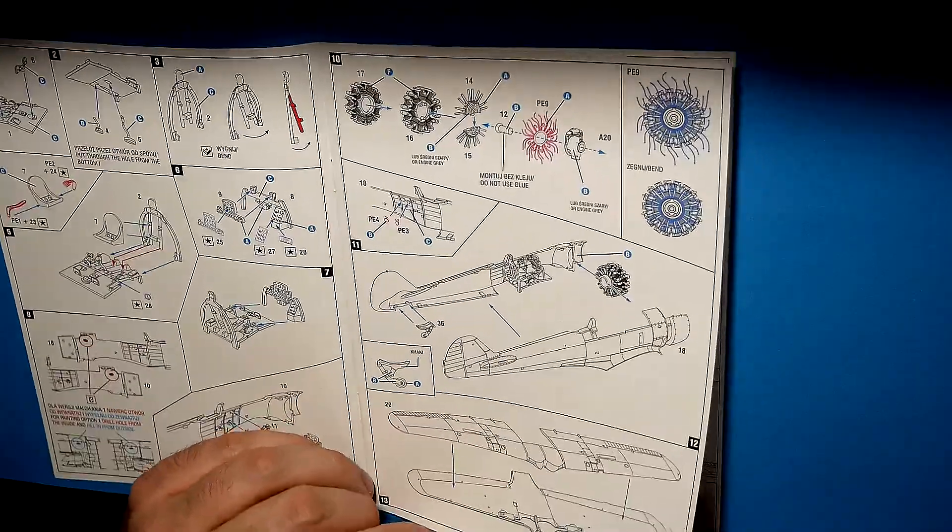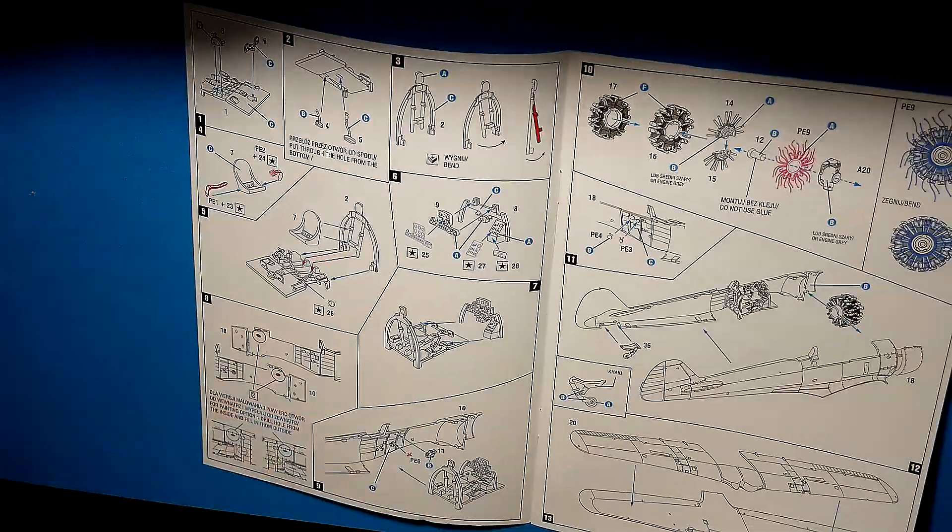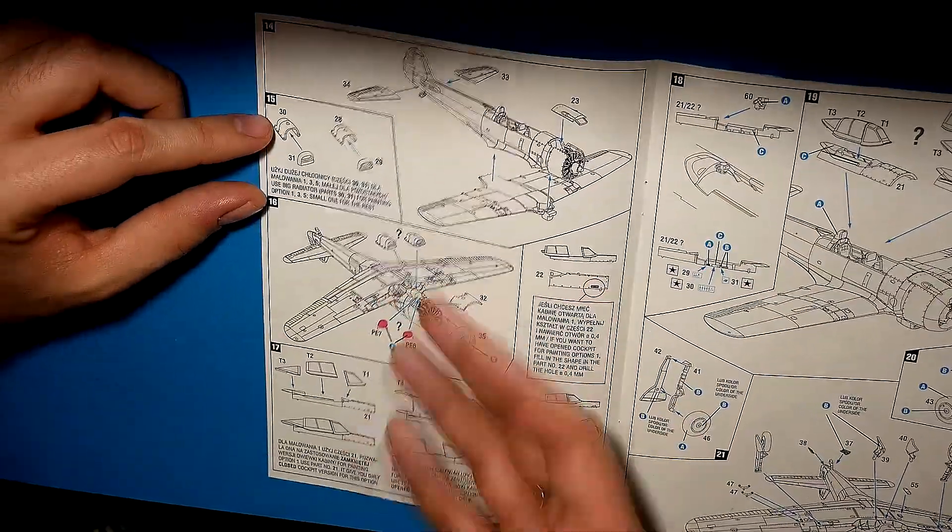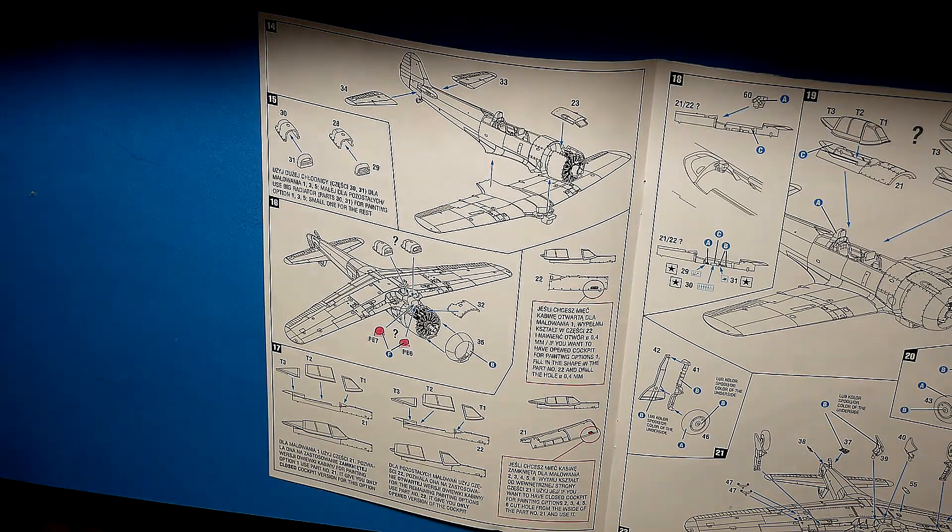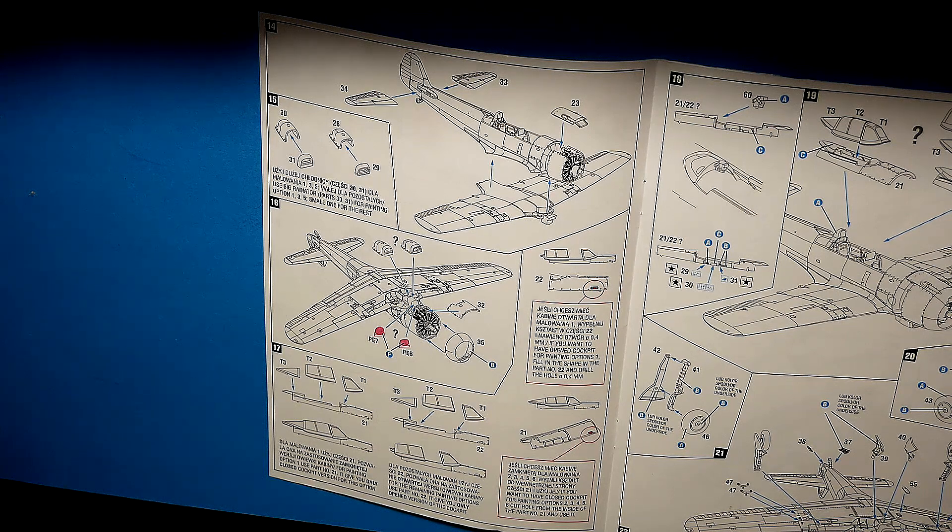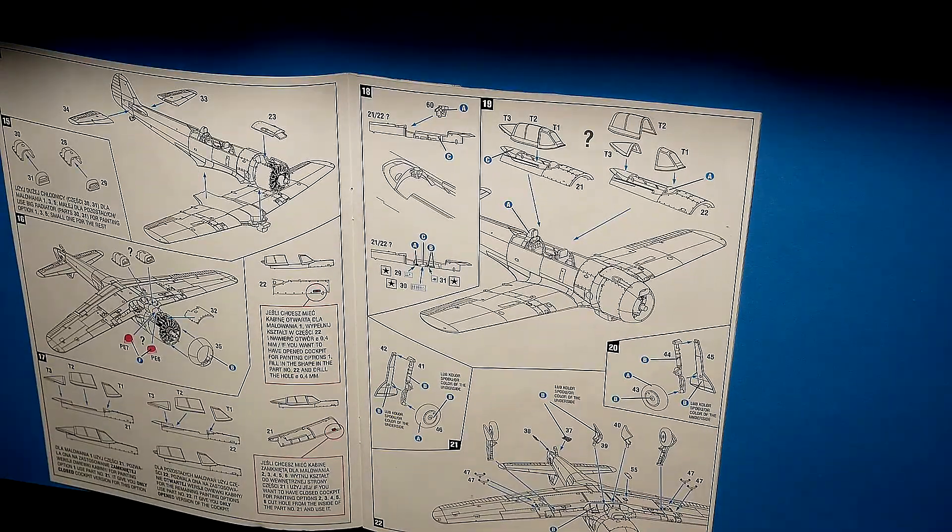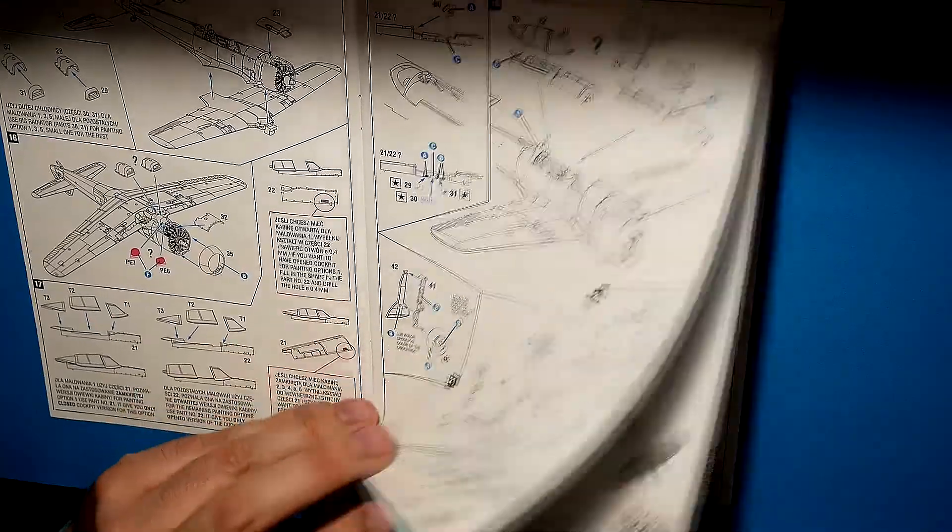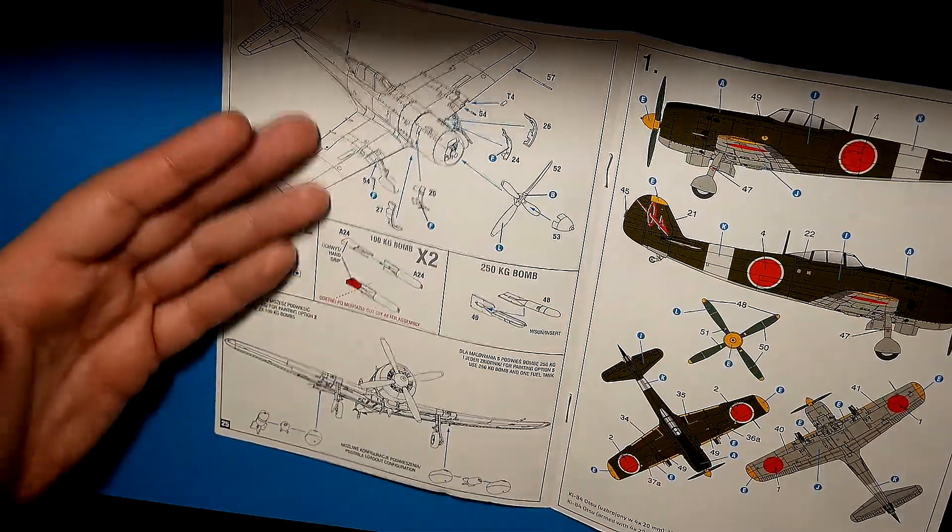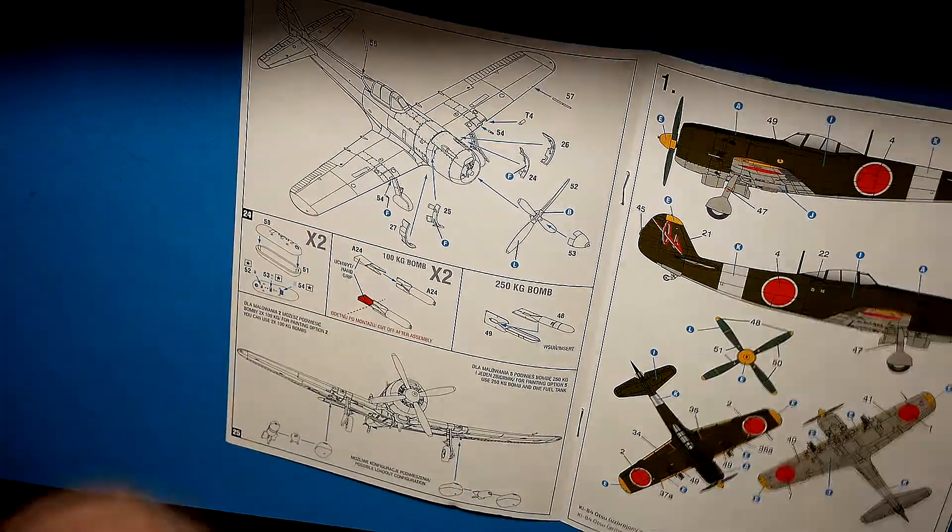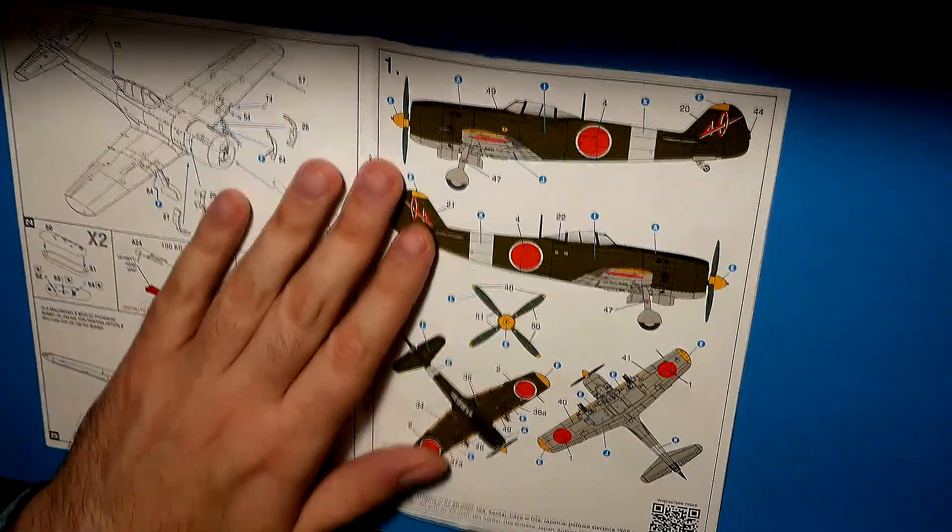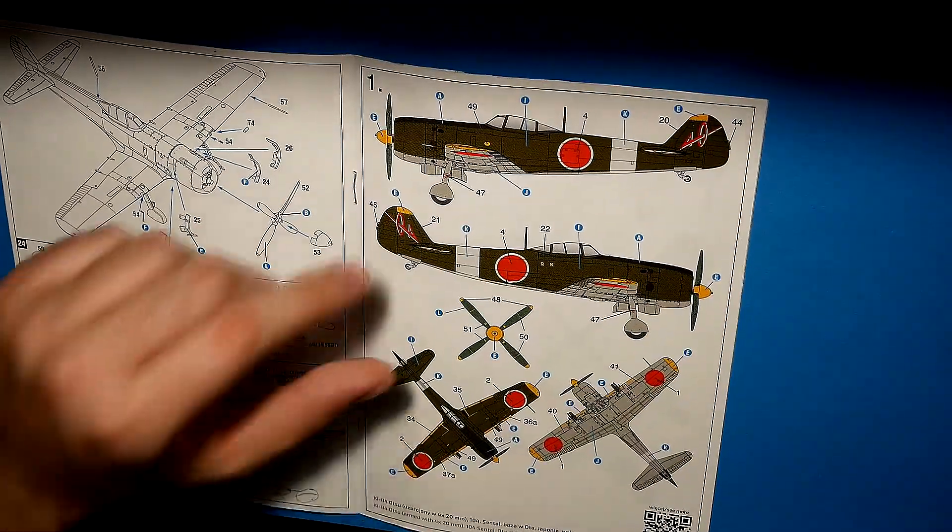PE parts for engine, PE parts underside of the plane for the cooling unit. Interesting way to assemble the bombs with that additional piece of plastic. And now markings - there are six paint schemes inside the box.